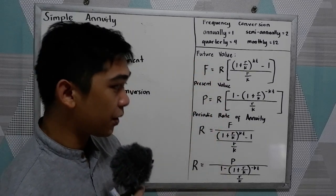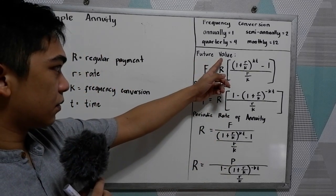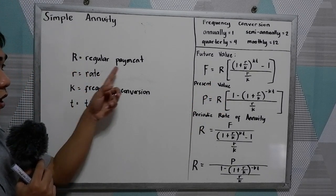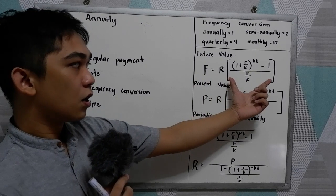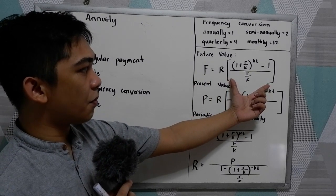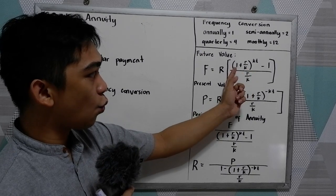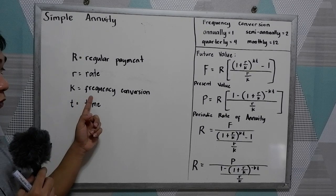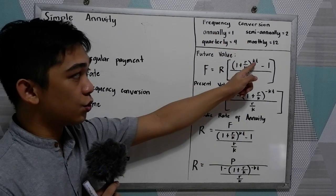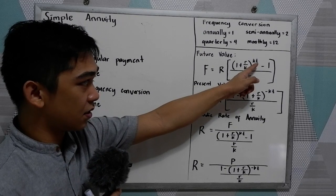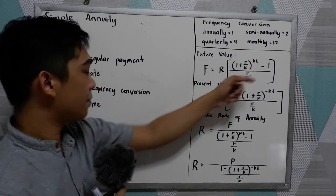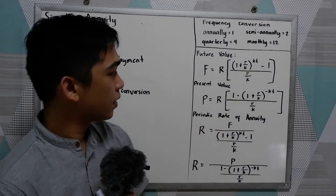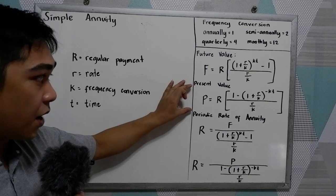We have the following formulas. For the future value, we have F is equal to R — R stands for the regular payment — open bracket, quantity 1 plus R over K, raised to K times T — frequency conversion times our time — minus 1, all over R over K.